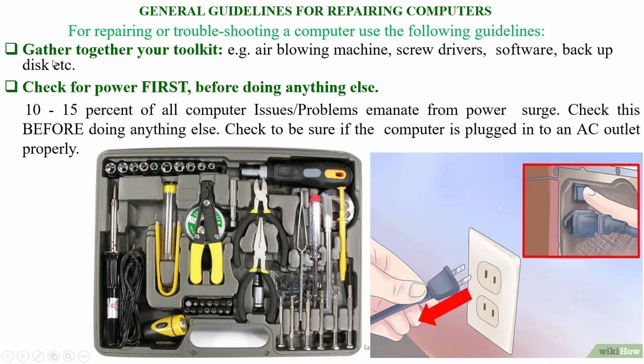Number one: gather together your toolkit — for example, air blowing machines, screwdrivers, software tools, and backup disks.